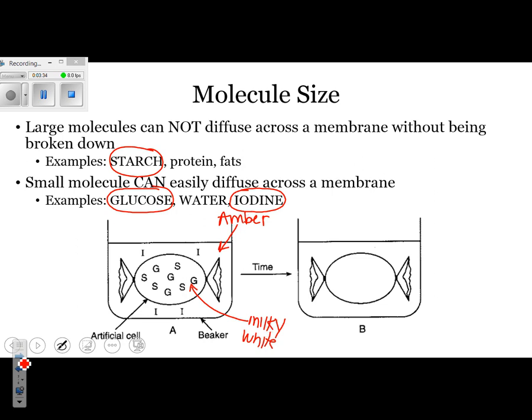Looking up at our examples with starch, glucose, and iodine, we want to make a hypothesis as to which ones we think are going to be able to diffuse. Draw where you think starch, glucose, and iodine will be located 20 minutes later.